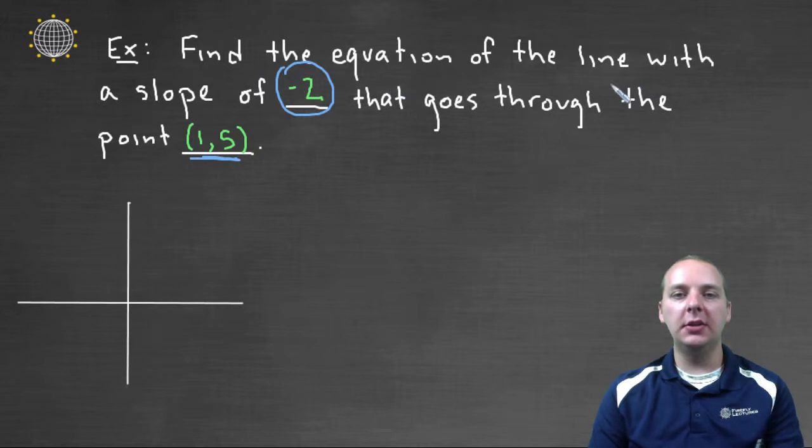Here it says find the equation of the line with a slope of negative two that goes specifically through the point one comma five. I can plot this - if the x is one when the y is five, it would go through this point right here. Here's one, five. And then with the slope being negative two, with the m being negative two,